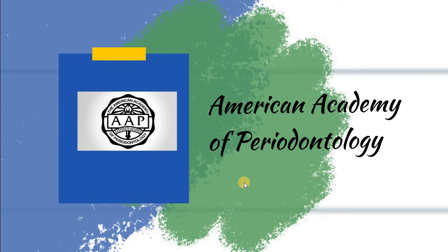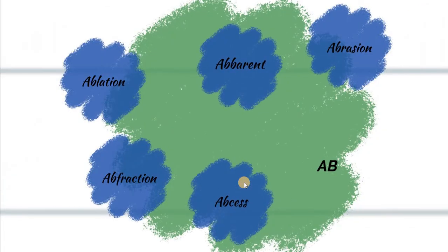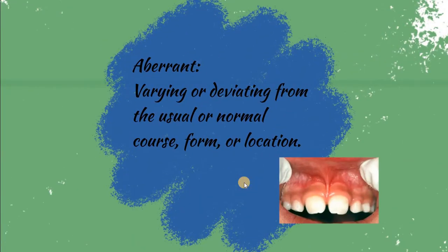The AAP is one of the most trusted academies regarding information on periodontal science. In the AB subdivision, we have the term aberrant. Aberrant is a deviation from the usual or normal course, form, or location.